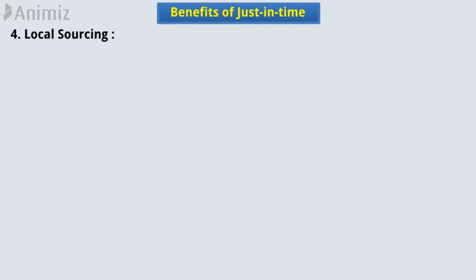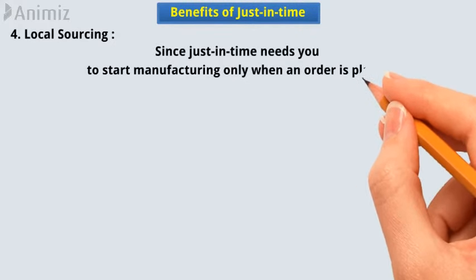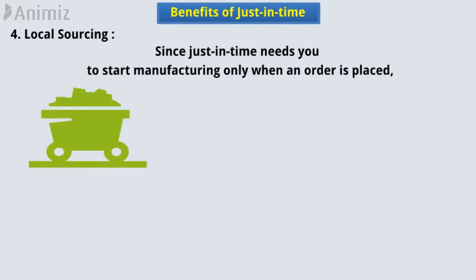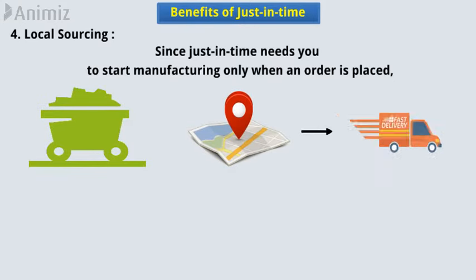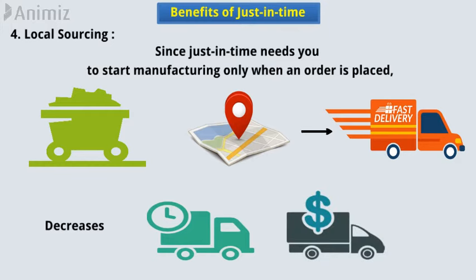4. Local sourcing. Since Just-in-Time requires you to start manufacturing only when an order is placed, you must source your raw materials locally, as they will be provided to your unit much faster. Furthermore, local sourcing decreases the transportation time and cost involved.